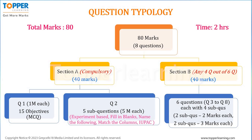Section A is compulsory and consists of 2 questions: Question 1 with 15 MCQs, and Question 2 with 5 sub-questions. Section B consists of 6 questions, out of which you have to attempt any 4 questions.